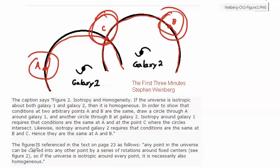And it also says any point in the universe can be carried to any other point by a series of rotations around fixed centers, so that if the universe appears isotropic around every point, it is necessarily also homogeneous.